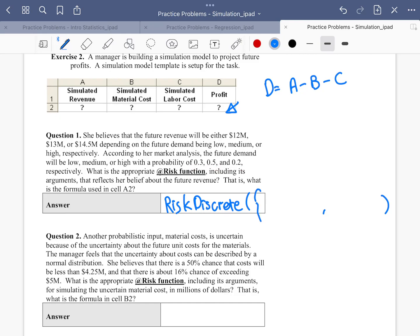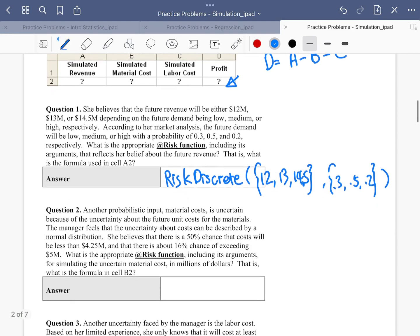There are a set of three numbers each. So I'm going to put a curly bracket here. 12, 13, 14.5, right? Make sure you separate them using a comma. And the next one is 0.3, 0.5, 0.2. Let's move on to part B, question two.